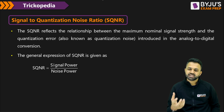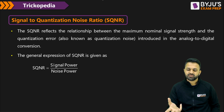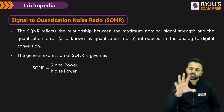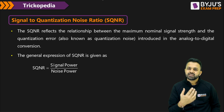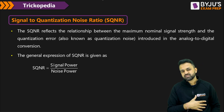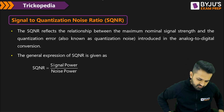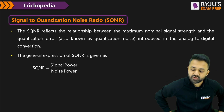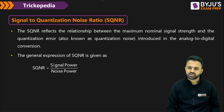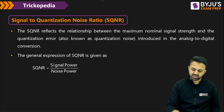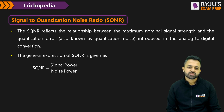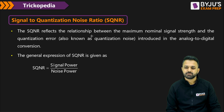If we calculate the mean square value of the quantization error, we get the quantization noise power. The signal to quantization noise ratio reflects the relation between the maximum signal strength and the quantization error.